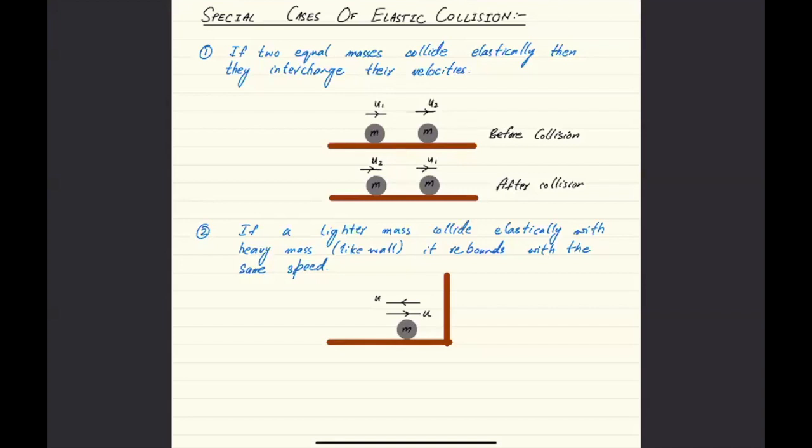After collision, the second particle will start moving with the first particle's velocity, and the first particle will start moving with the second particle's velocity. So they will just simply exchange their velocities if you will check two conditions.